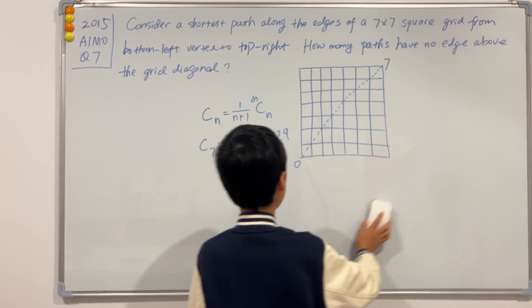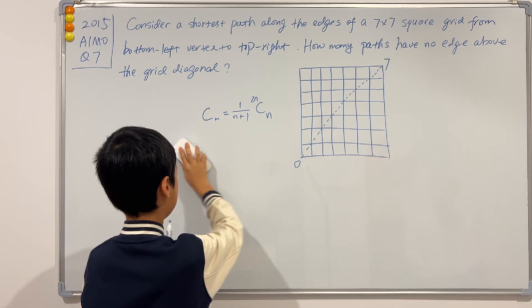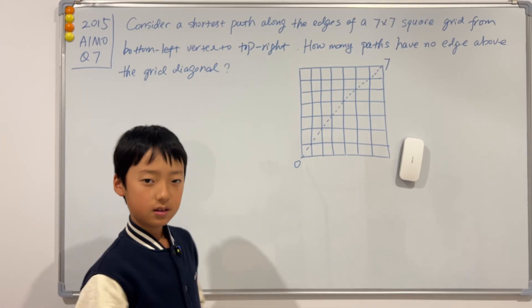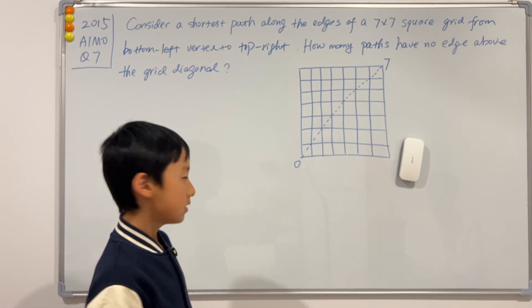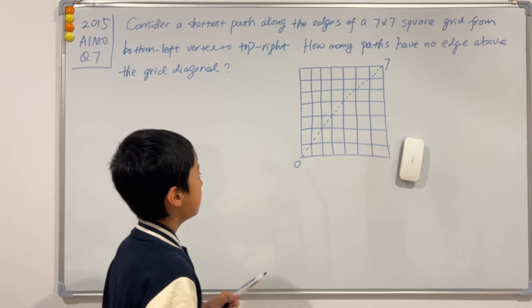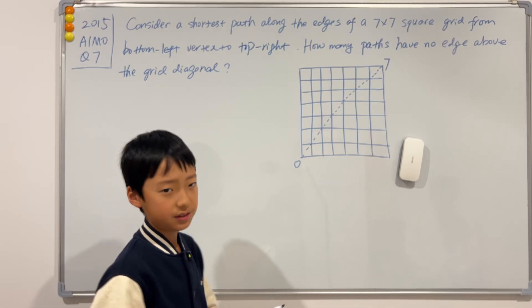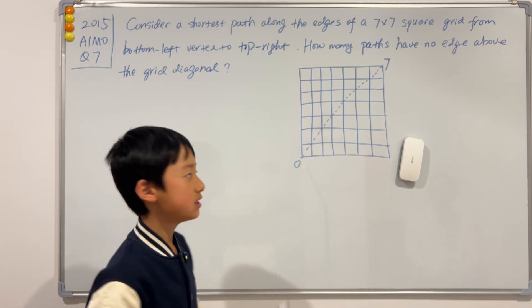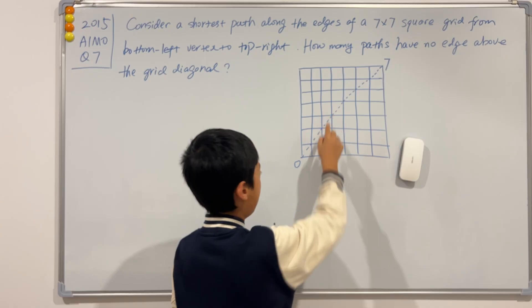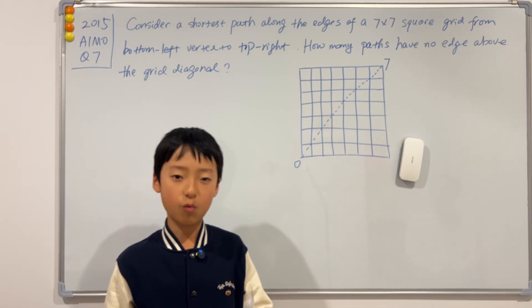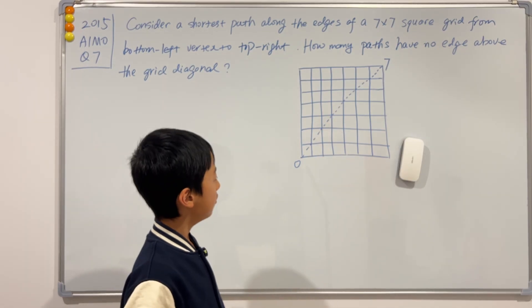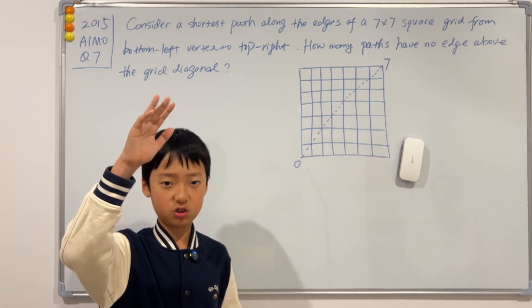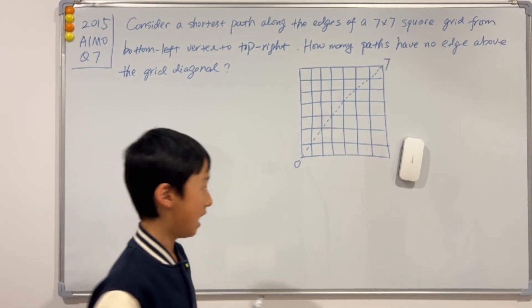The second way is a recursive approach, and this is a high school level method. Have you noticed that in some paths, because we can't go over this diagonal, some edges will touch the diagonal and some paths won't? This brings us to the question: do we have to split it into cases with touch and no touch? I'm actually going to do that now.